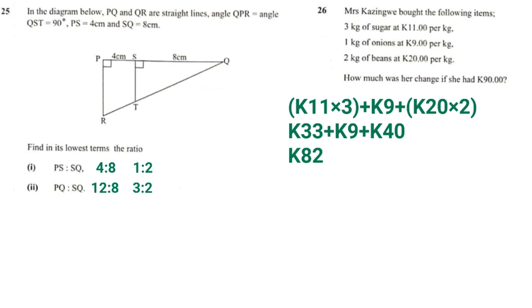Now she had 90 kwacha. So we're going to find out the change, which is going to be 90 kwacha minus 82 kwacha, which will give us 8 kwacha. So her change was 8 kwacha.